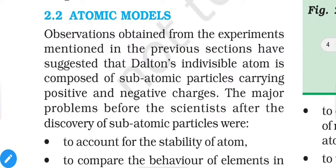The next topic is atomic models. Multiple atomic models were proposed in early science; scientists discovered different models but they had some mistakes. Step by step, later scientists corrected them and eventually arrived at the correct structure of the atom. Dalton's atomic theory was not able to explain certain experimental results — why positive or negative particles are generated — since according to Dalton, atoms are indivisible. But these practical results show they are divisible and have subatomic particles.